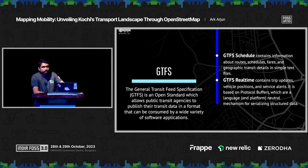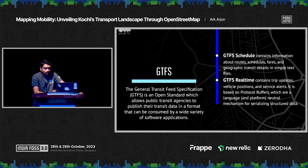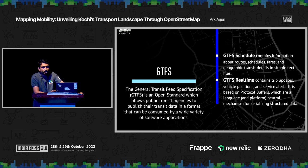Here I'm talking about one such open standard used for transit data: GTFS, which was initially developed by Google. The General Transit Feed Specification is an open standard that allows public transit agencies to publish their data in a format that ensures interoperability. There are two types of GTFS formats: one is the schedule, which is static data covering when buses are scheduled and how the timetable is set up; the second is the real-time network data sent from devices installed in the vehicles.